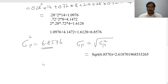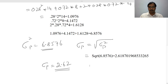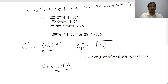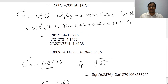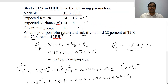The variance of the portfolio is 6.8576, so the standard deviation of the portfolio is 2.62. This is how we calculate portfolio variance and standard deviation. In my next video, I will show you another method of calculating portfolio variance and standard deviation.